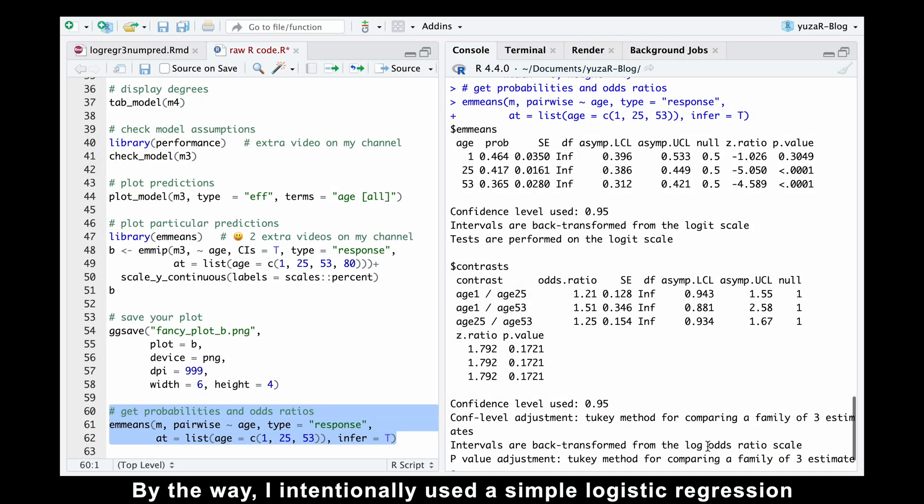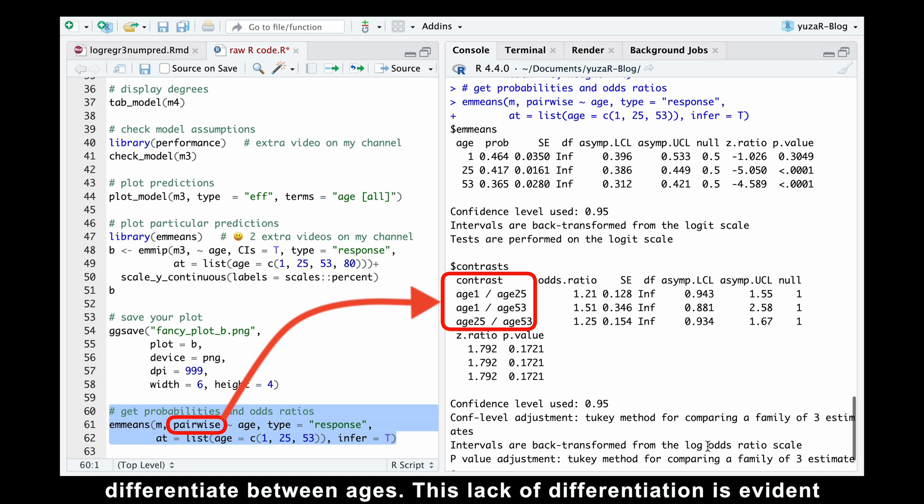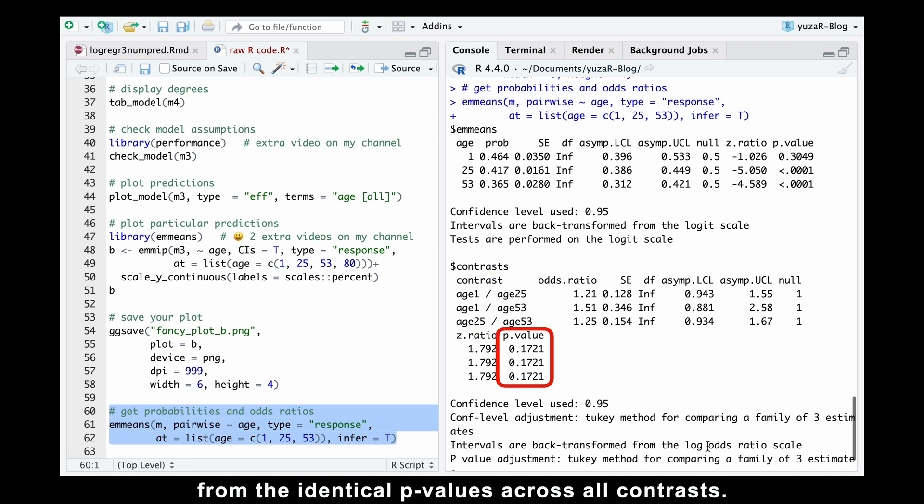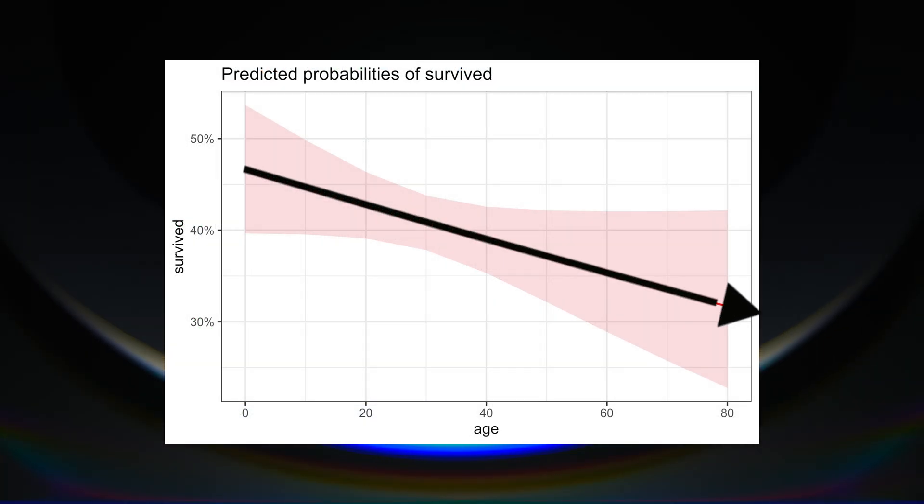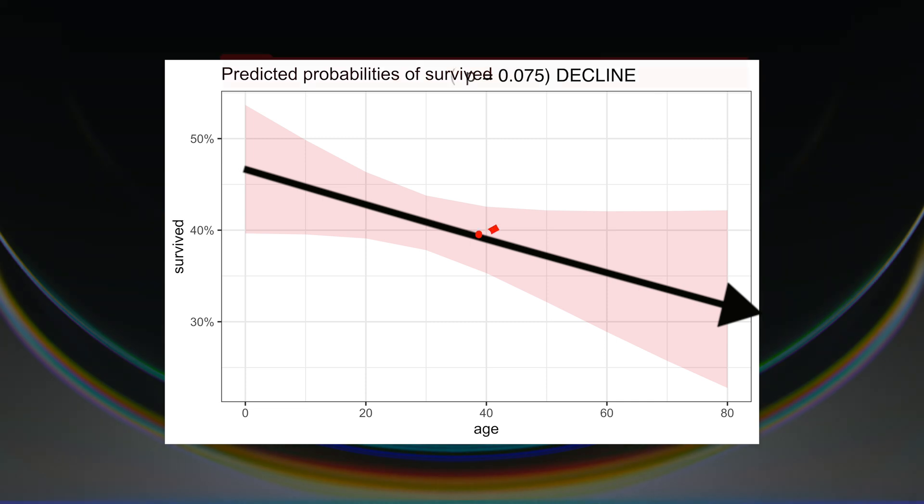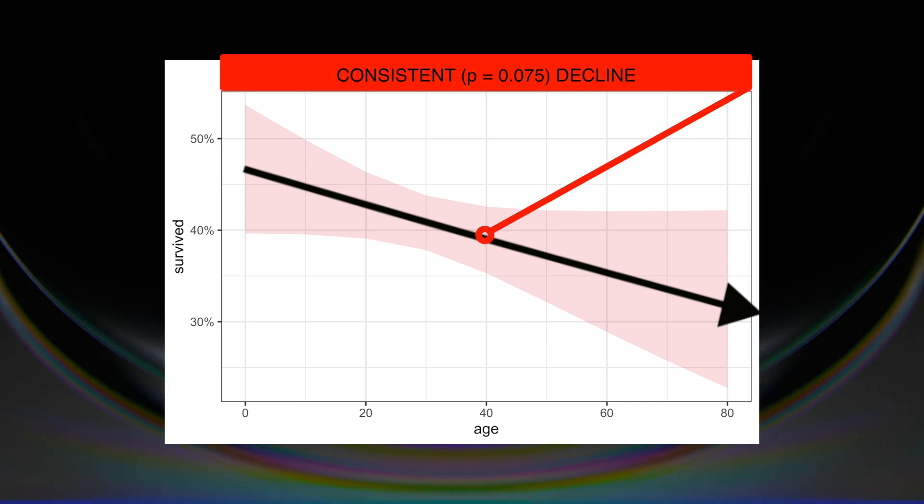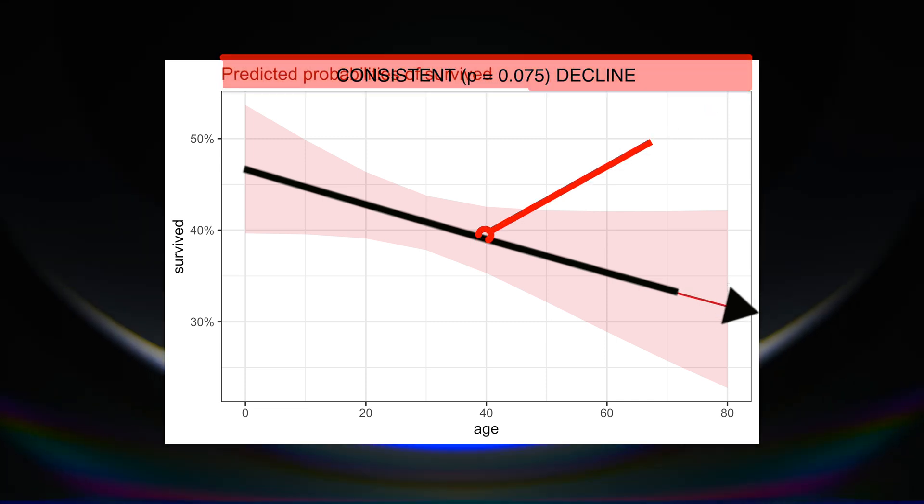By the way, I intentionally used a simple logistic regression without polynomial degree to demonstrate that we cannot differentiate between ages. This lack of differentiation is evident from the identical p-values across all contrasts. Our straightforward model implies a linear relationship between age and the probability of survival, revealing a consistent but statistically insignificant decline.